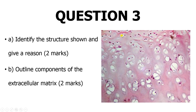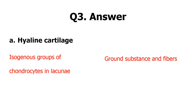The extracellular matrix has two components: ground substance and fibers. Ground substance is the gel material made of glycosaminoglycans and proteoglycans. The fibers include collagen fibers, reticular fibers, and elastic fibers.